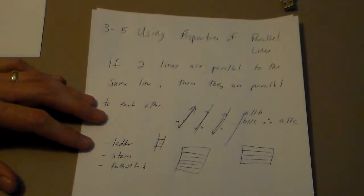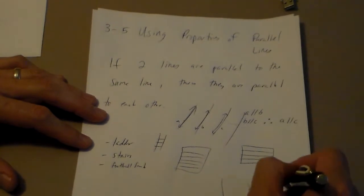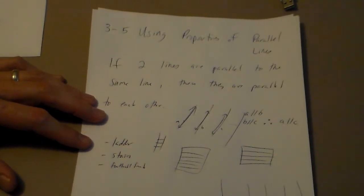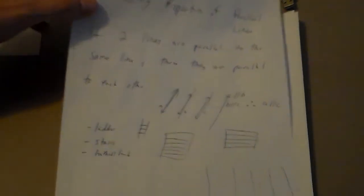If you're in class and you look at the floor, all the squares in the floor, all those lines are parallel, if you look at that. So those are all different examples of that particular property in real life.